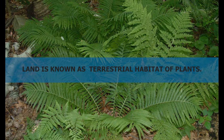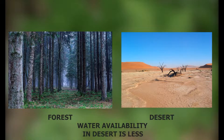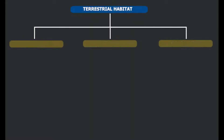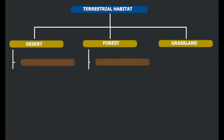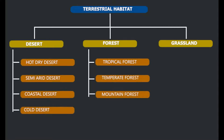Land is known as terrestrial habitat. The availability of water varies from place to place — for example, water available in deserts differs greatly from that in forests. Terrestrial habitats are divided into three categories: one, desert; two, grassland; and three, forest.